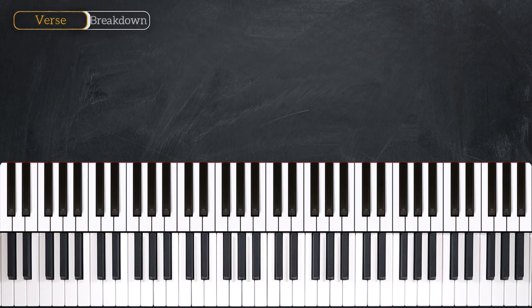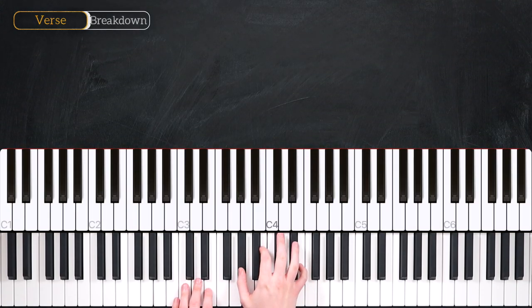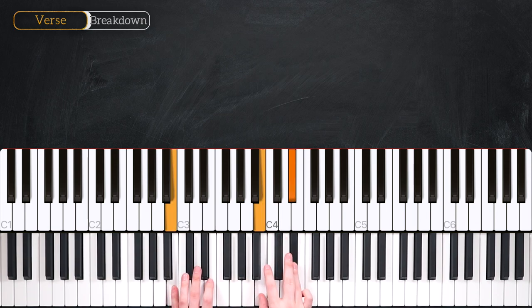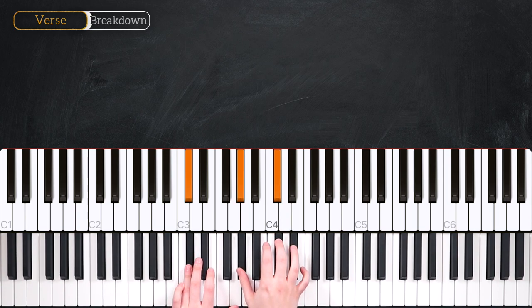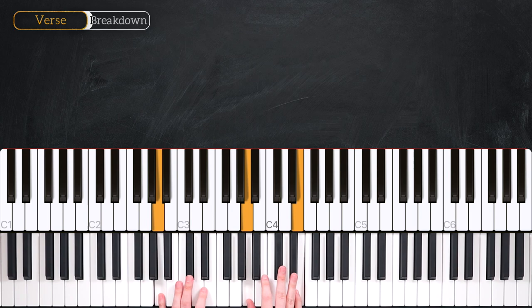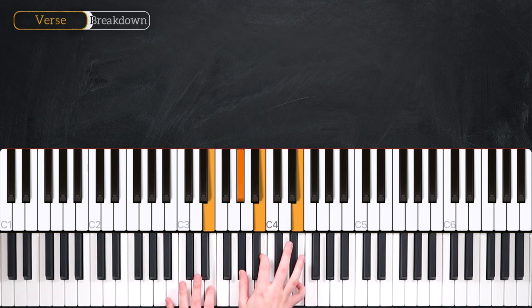Let's quickly recap those chords. We've got our E major, moving to our B major, to our C sharp minor, to our A major, and back to E.